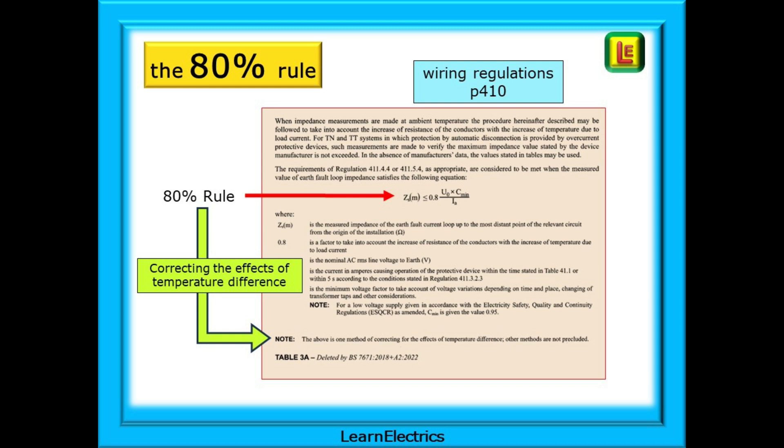Each circuit breaker RCBO and fuse type will have a different ZS measured value and these are shown in the on site guide in appendix B starting on page 139. Learn to use this appendix especially the data on page 145. You will use the information a lot in your career.